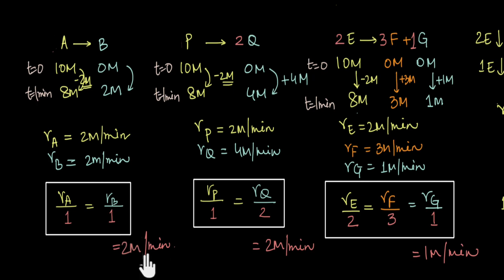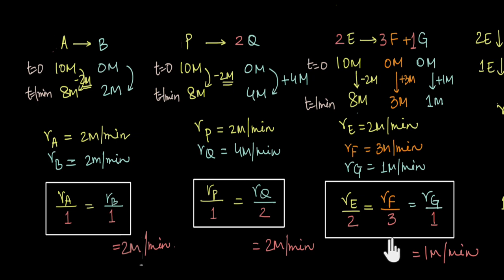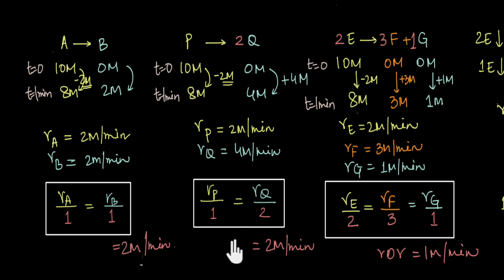Chemists all over the world have agreed to call the value we get by dividing the rate of the reactant or the product by its respective stoichiometric coefficient the rate of the reaction. So for the reaction 2E→3F+G, the rate of the reaction by definition is 1 molar per minute. For P→2Q, the rate of the reaction by definition is 2 molar per minute. And the rate of the reaction for A→B is also 2 molar per minute.